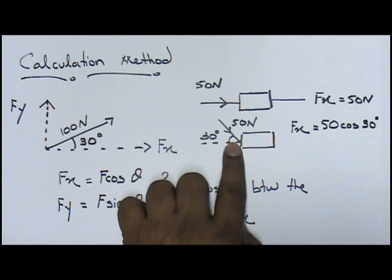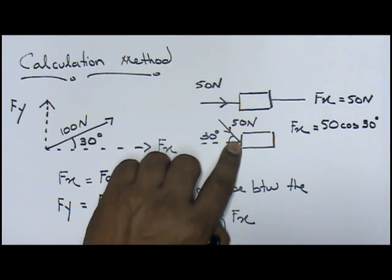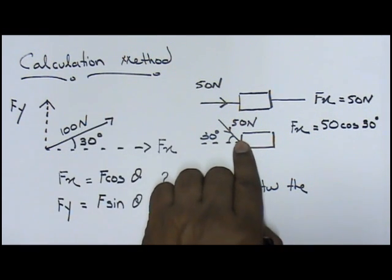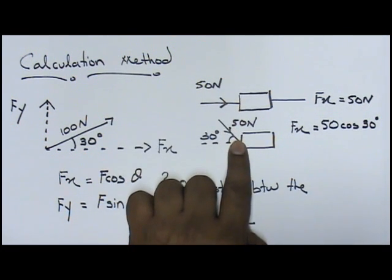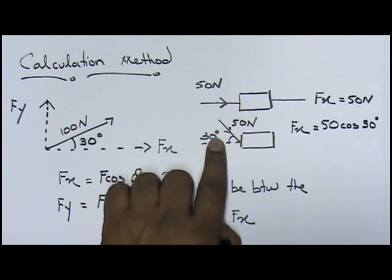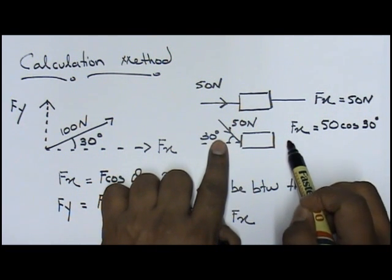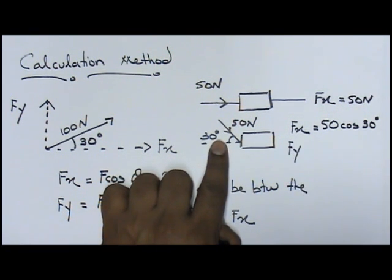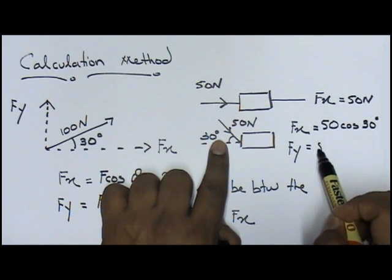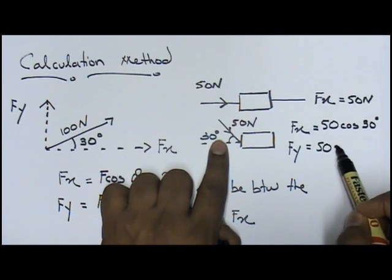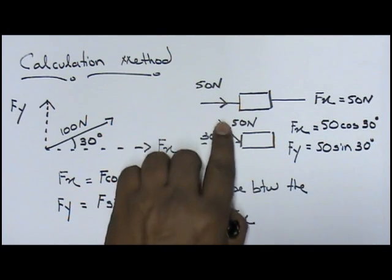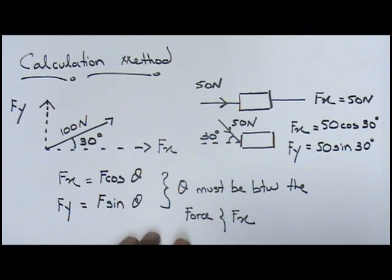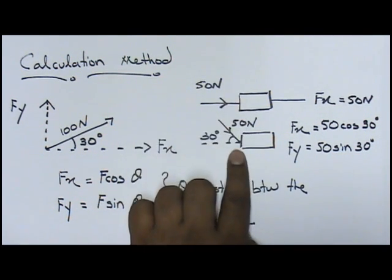Now, at the same time, because the force has an angle, that means your force is acting on your x direction and it's also acting on your y direction because you have an angle. To find my force on the y direction, it's going to be Fy equals to 50 sine 30 degrees. So you see, you have a force on the x direction and a force on the y direction.